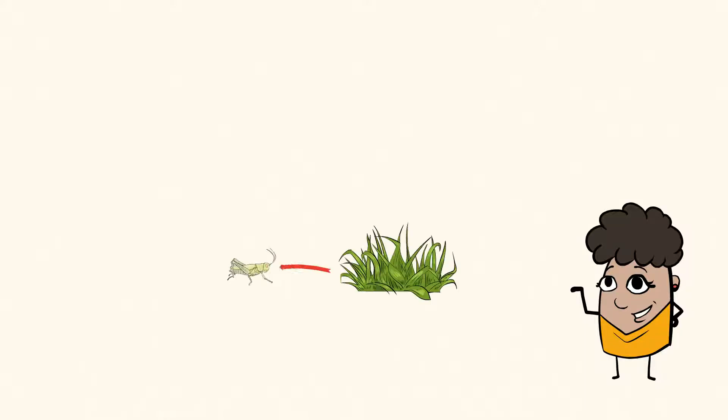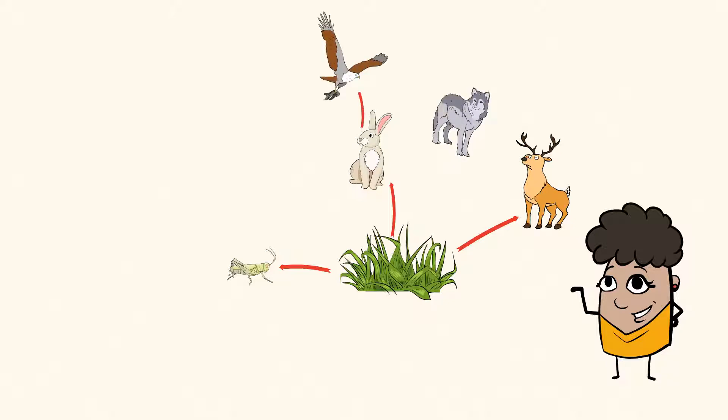We know that the grasshopper eats the grass, but it isn't the only one. A rabbit and a deer could also make the grass a crunchy meal. And a hawk might hunt the rabbit. But a wolf or owl could be interested in making the rabbit its lunch.